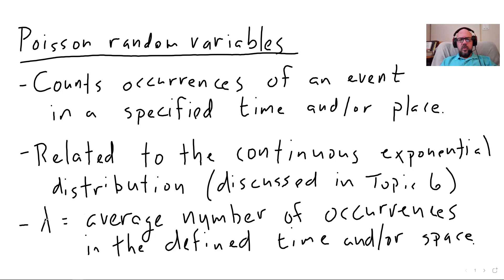All right. So lambda, this is a lowercase Greek L, looks like a little house or something or hard to describe what that looks like. We will use that a few more times. This is the symbol that we use for the average number of occurrences in the defined time and/or space. So we'll see how we're going to use that in just a second, but that's what we use in this particular random variable.